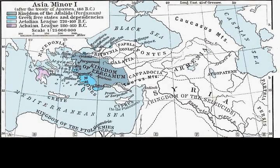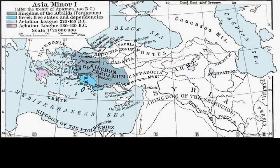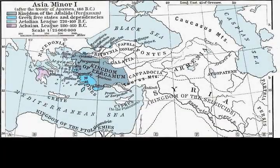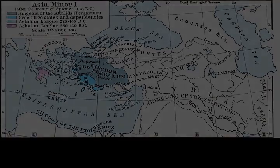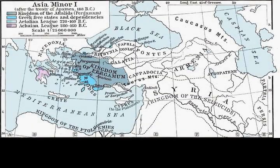Primary Sources: Livy, translated by Henry Bettenson, Rome and the Mediterranean, London, Penguin Classics, ISBN 014-044-3185. Online Sources: Monson, Theodore, A History of Rome, Volume 3, Project Gutenberg, retrieved 16 July 2007. Pennell, Robert, Ancient Rome: From the Earliest Times Down to 476 AD, Project Gutenberg, retrieved 16 July 2007. Smith, William, A Smaller History of Rome, Project Gutenberg, retrieved 16 July 2007.